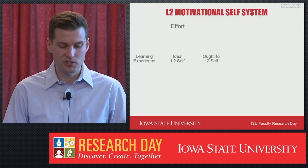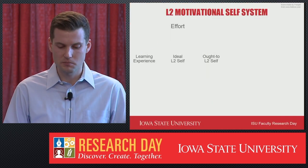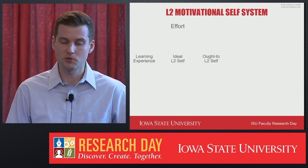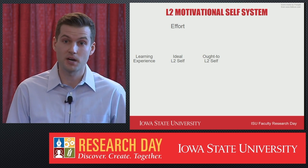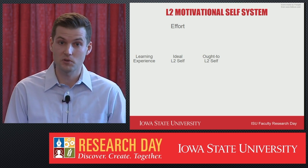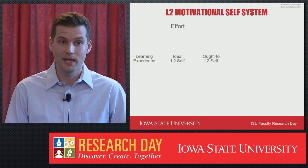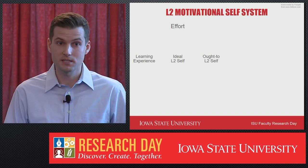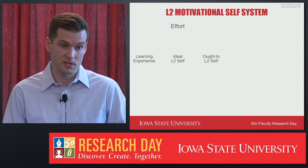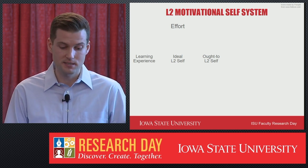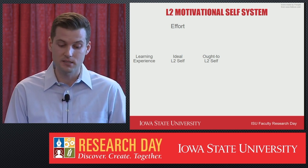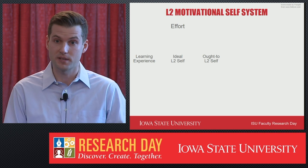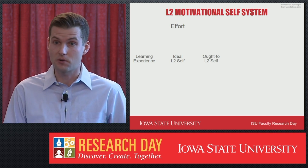The L2 motivational self-system is the dominant model of language learning motivation. It predominantly conceptualizes motivation in terms of three motivational antecedents: the learning experience, ideal L2 self, and ought-to L2 self.